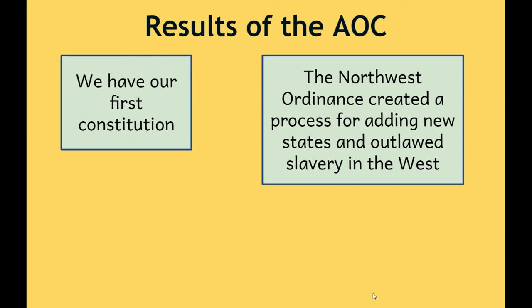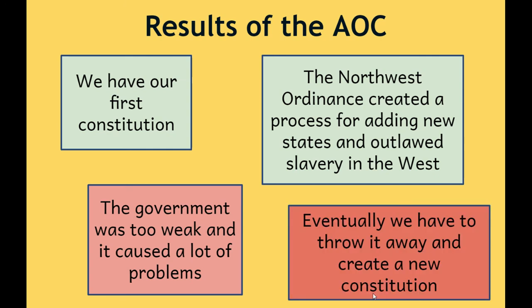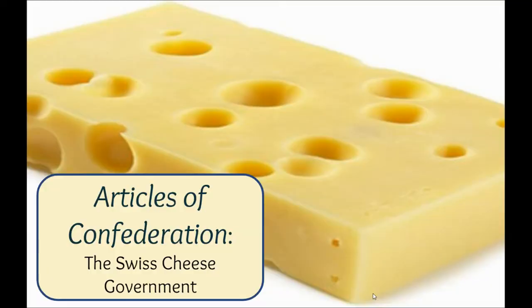But there are some bad results of the Articles of Confederation. The first is that the government was too weak and it caused a lot of problems. They met their goal — the national government was weak — but they made it too weak. They almost went too far opposite of King George III. Eventually they realized that the Articles of Confederation is too weak, it's not going to work, and they have to throw it away and make a new constitution. That's why the Articles of Confederation is often called the Swiss Cheese Government — because there are all kinds of holes. Just like Swiss cheese has holes in it, these weaknesses are like holes in our government or holes in our country.